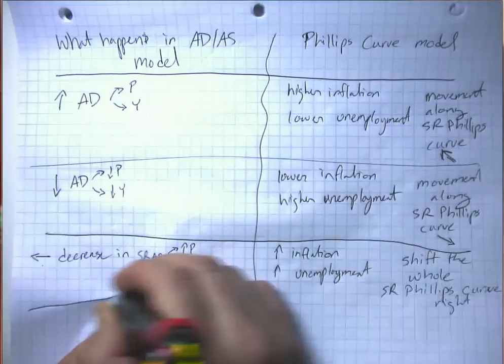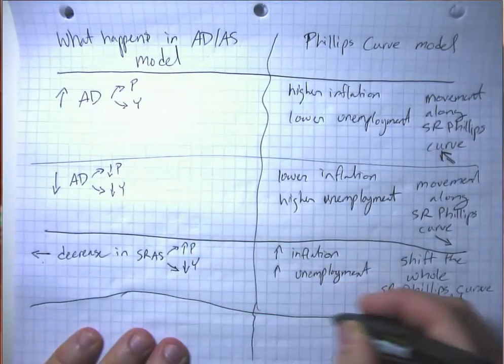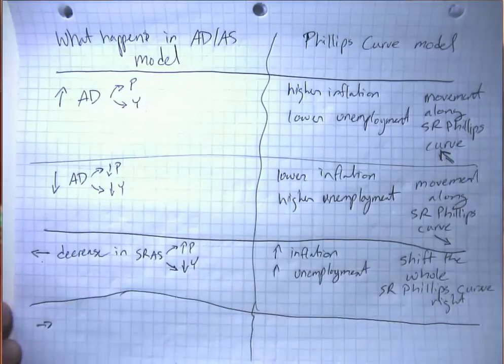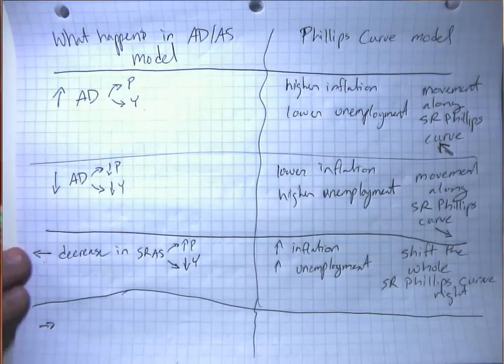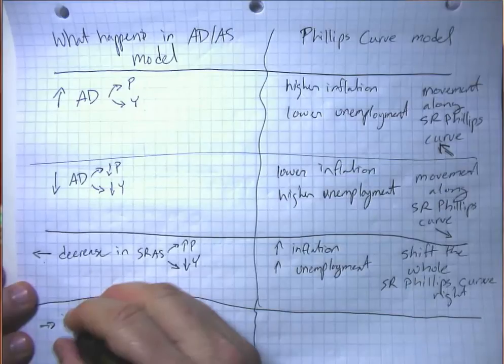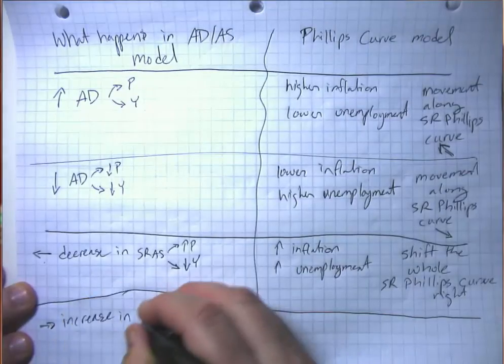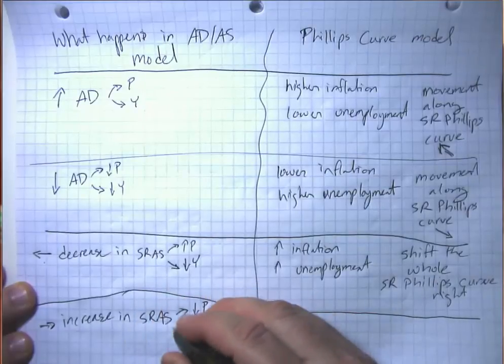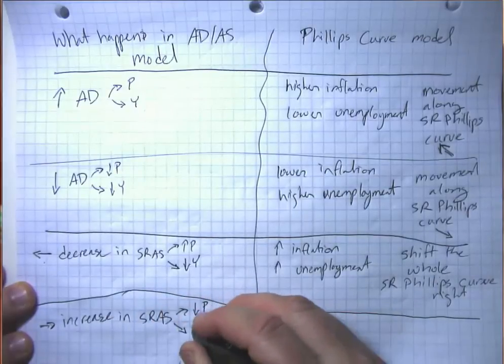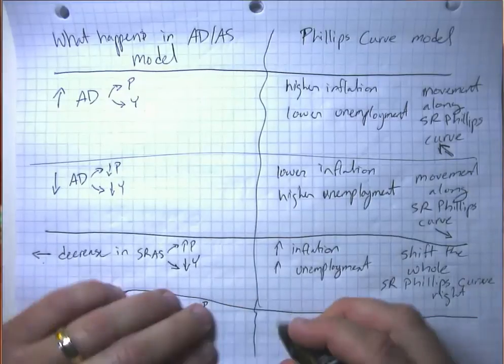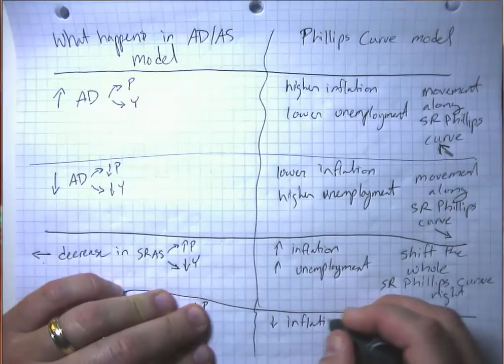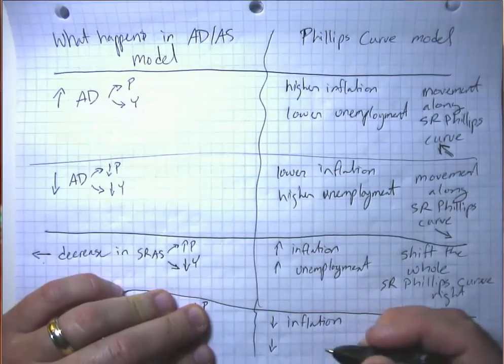And if we have a rightward shift or an increase in short-run aggregate supply, then we have a fall in the general price level and an increase in GDP. So we both have a fall in inflation and a decrease in unemployment.